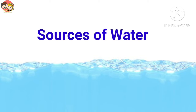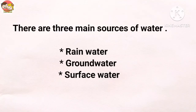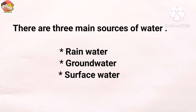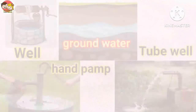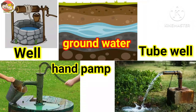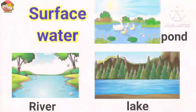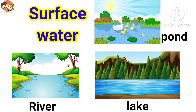Sources of water. There are three main sources of water: rainwater, groundwater, and surface water. Rainwater is the main source of water. Rainwater also goes below the ground — this water is called groundwater. We get groundwater through wells, tube wells, and hand pumps.